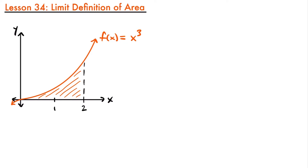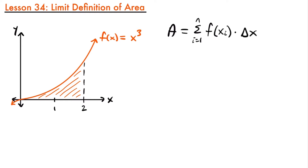The formula we used to calculate that area was that the area is equal to the sum from i equals 1 to n — the number of rectangles we're using — of the function evaluated at x sub i, which represents the height of our rectangles, multiplied by delta x, which represents the width of our rectangles.